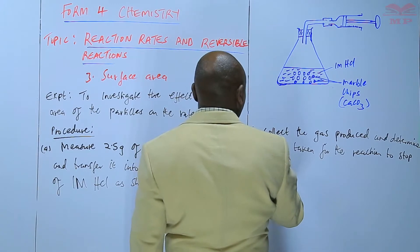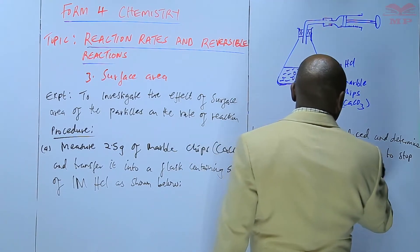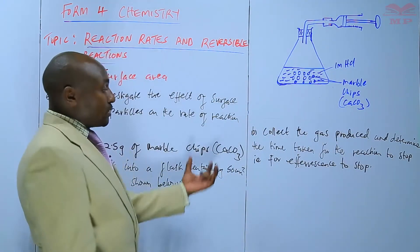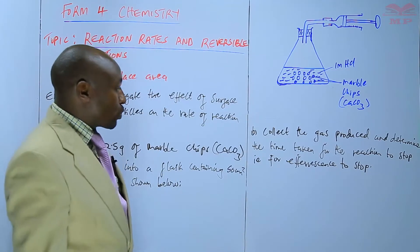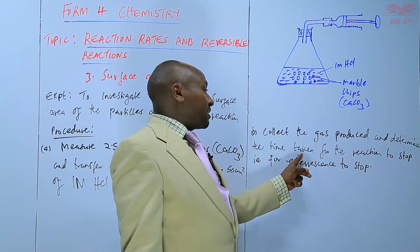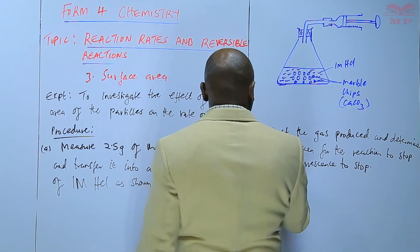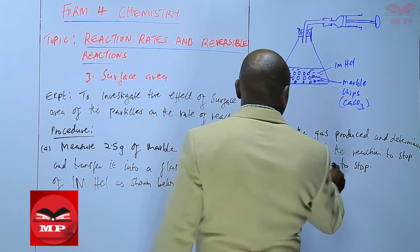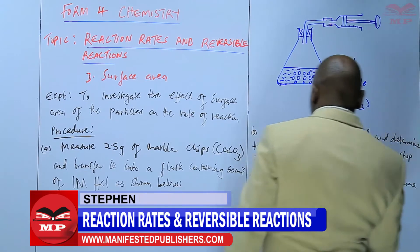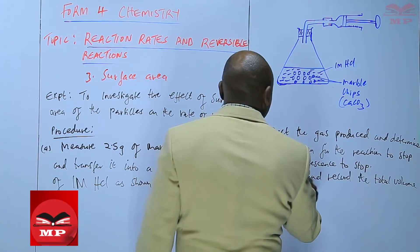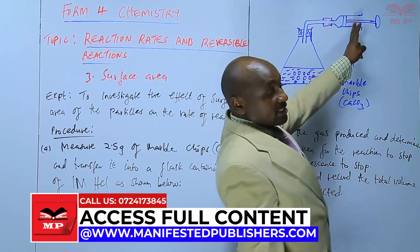We collect the gas produced and determine the time taken for the reaction to stop — that is, for effervescence to stop. Effervescence is when a gas is being produced; that bubbling seen in the flask. When that bubbling stops, the reaction has also stopped. We then measure and record the total volume of gas collected in the gas syringe.